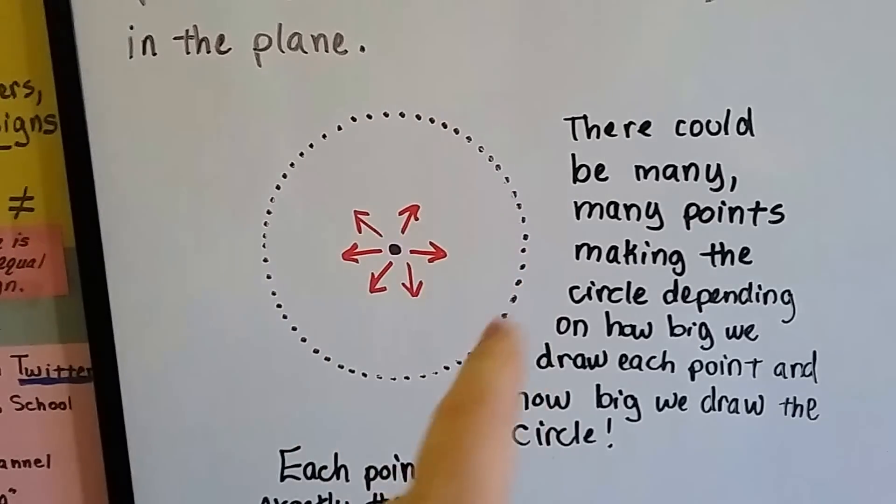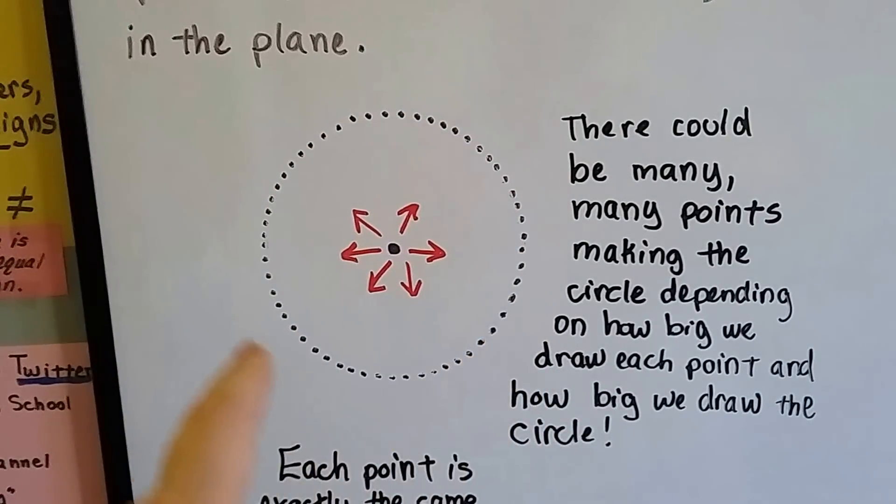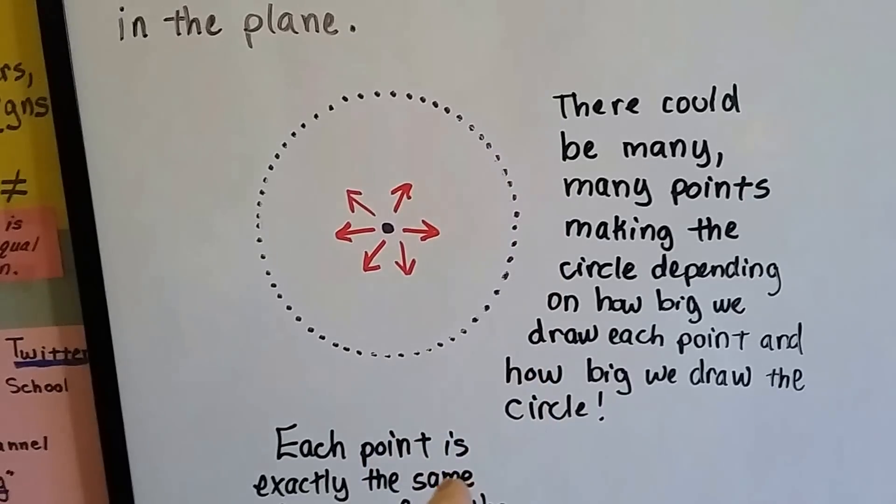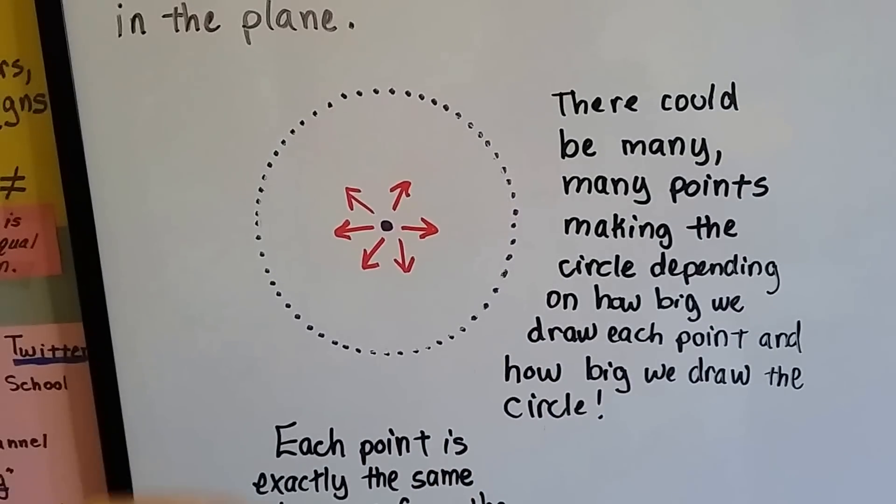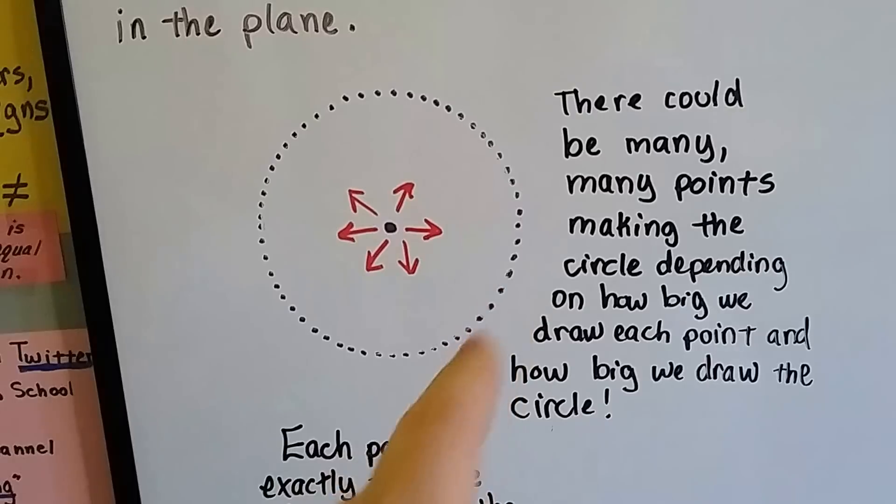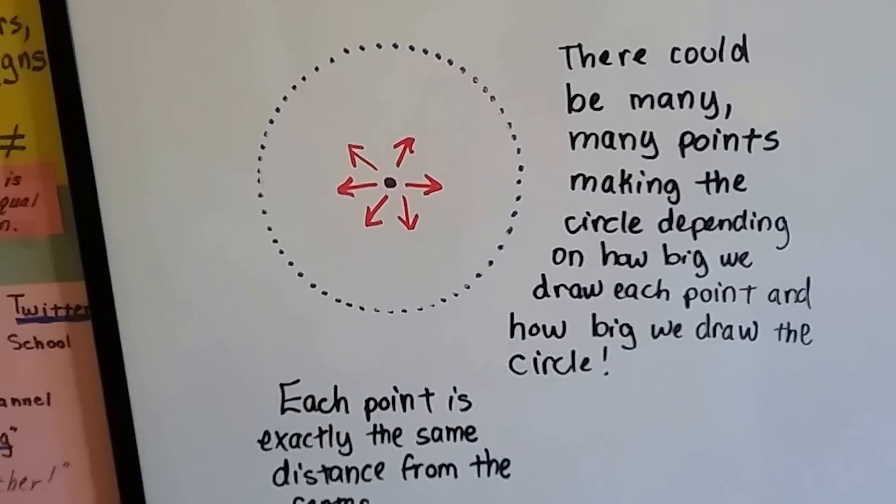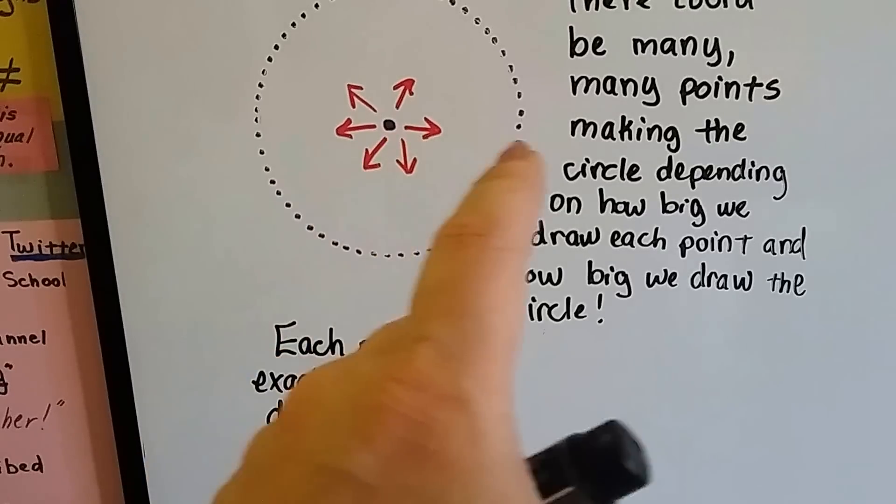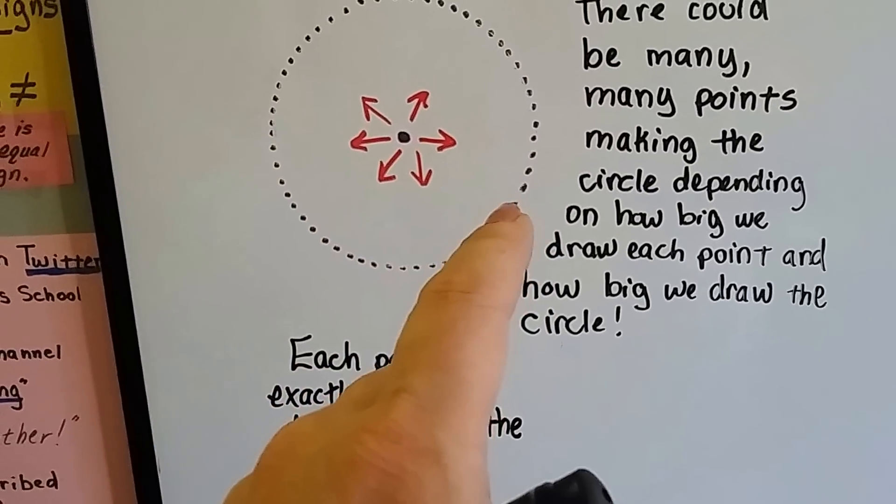There's so many millions of points that they're crowded together, and they sort of look like they're making a line that makes the circle. But a circle is actually an infinite number of points that are the same distance from the center. They're exactly the same distance. That point is the same distance as that point.